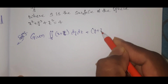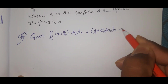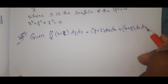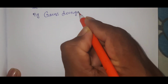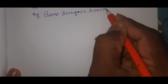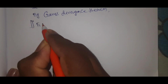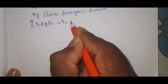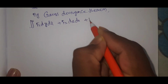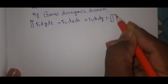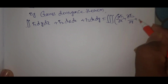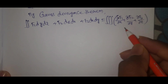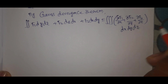By Gauss Divergence Theorem, the double integral over S of f1 dy dz plus f2 dz dx plus f3 dx dy equals the triple integral over V of (∂f1/∂x plus ∂f2/∂y plus ∂f3/∂z) dx dy dz.